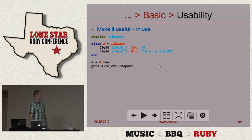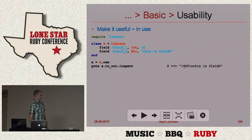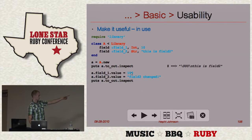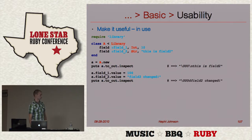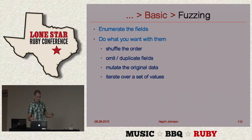Here's a simple example: class A with field_one as an int with value 10, and field_two as a string 'this is field two.' We make a new instance, inspect the output — it's packed as a 16-bit integer in network byte order, and the string is right after it, just like we expect. We change field_one to 100, field_two to 'field two change,' and that works as well.